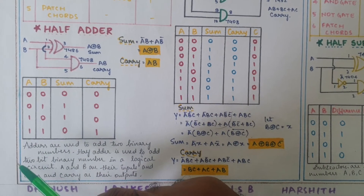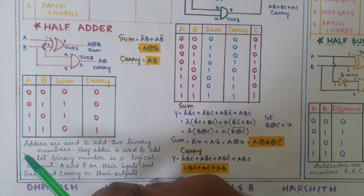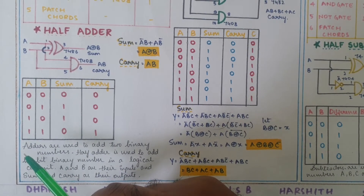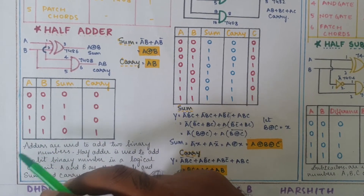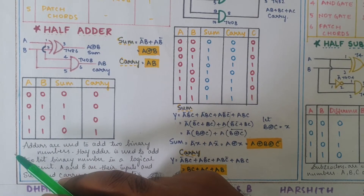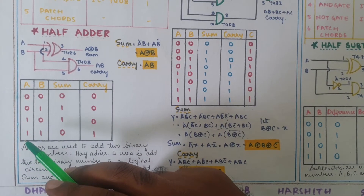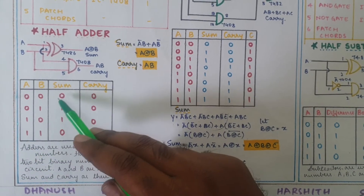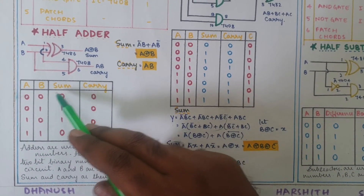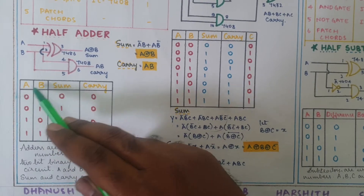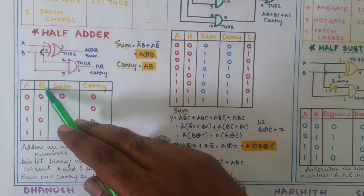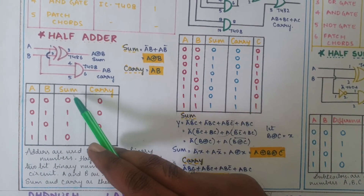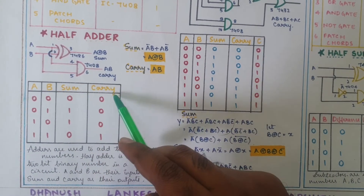Now the question is: how do we add two-bit numbers? The addition of two bits generates two things. The inputs will be A and B — that is two bits — and the outputs will be sum and carry.